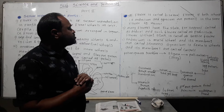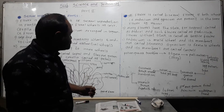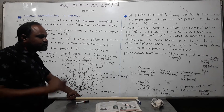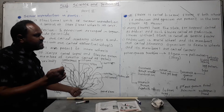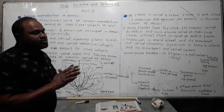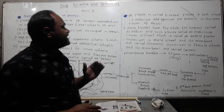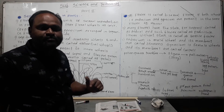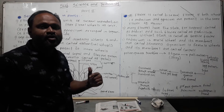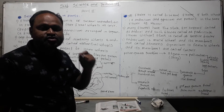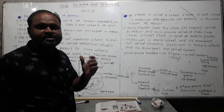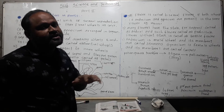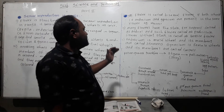Many flowers have a stalk for support; a flower with a stalk is called a pedicellate flower, and a flower without a stalk is called a sessile flower. Hibiscus is a pedicellate flower because it has a stalk.